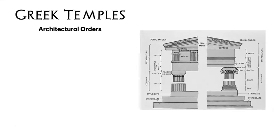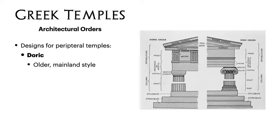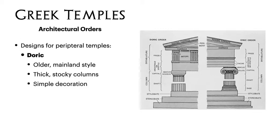Now I'd like to move on to talking about architectural orders, to give you a bit more context of how exactly the Parthenon is designed. These orders of architecture are some different designs for peripteral temples, and we need to talk about two of them. The first one, which you can see on the left-hand side of the picture, is the Doric order. It is an older style of architecture. It predates the Ionic order and it originated in mainland Greece. As you can see, the columns are quite thick and stocky and bulky, with decorations being very simple, and this was seen as a more masculine style of architecture.